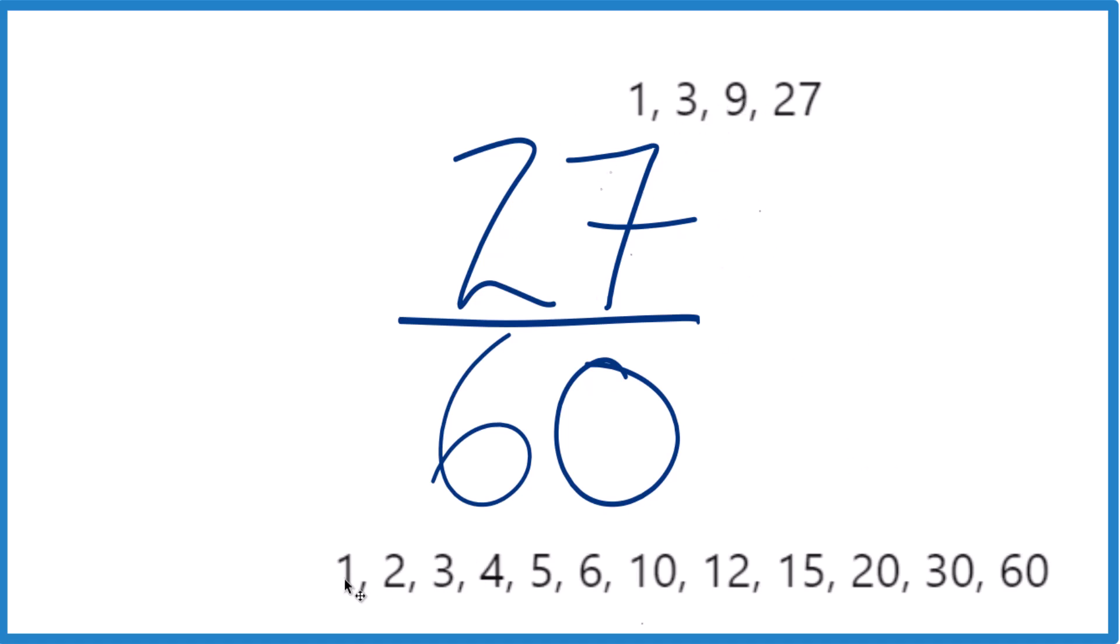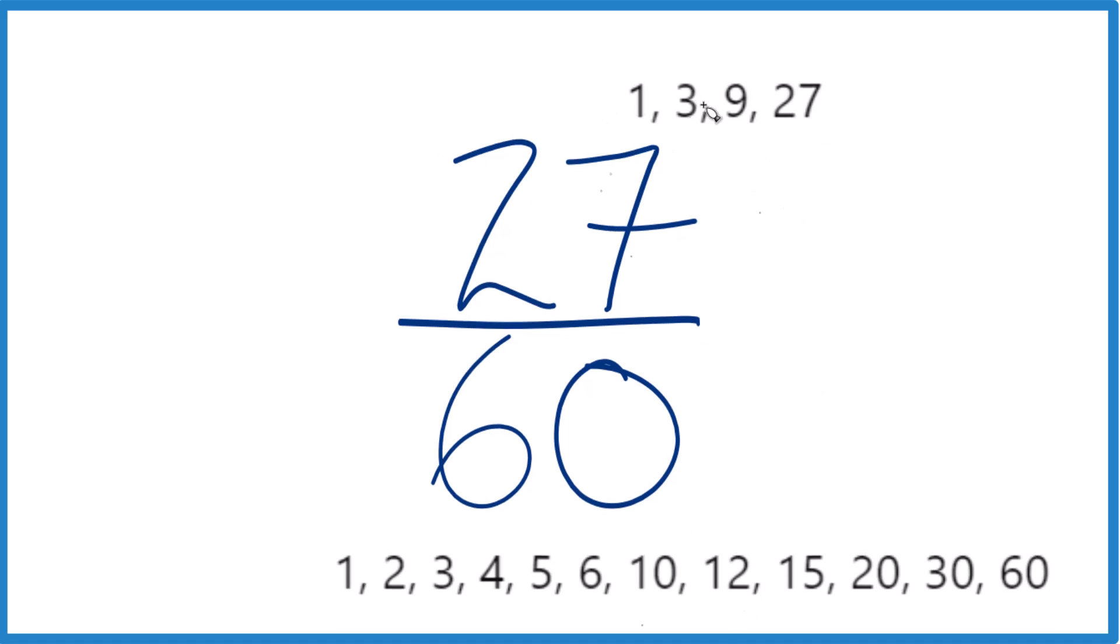Then for 60, 1 times 60, 2 times 30, and so on. So we need to find the factor that's in common between these two numbers, the common factor. And it looks like 3, that's a common factor. Of course, 1 is a common factor as well.